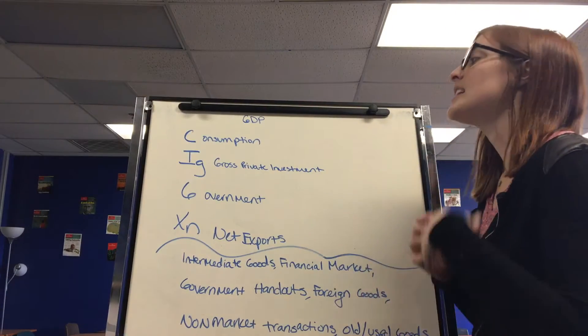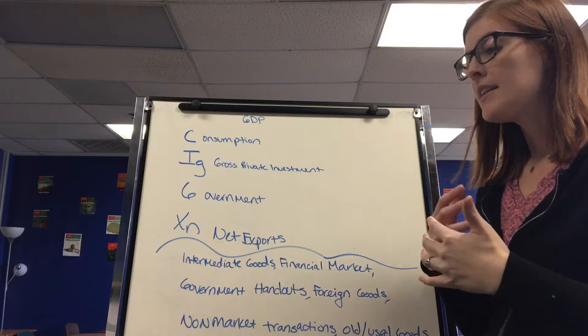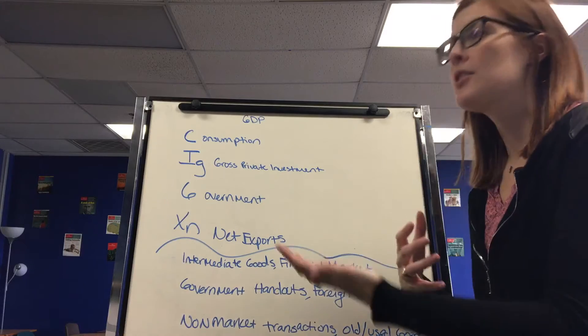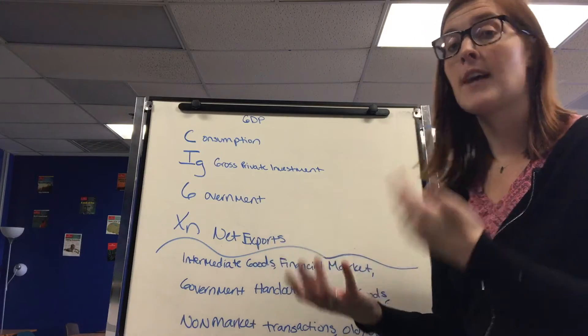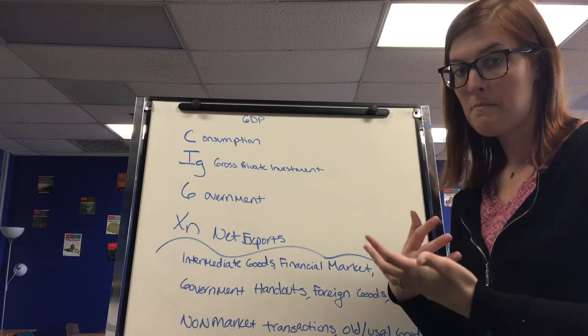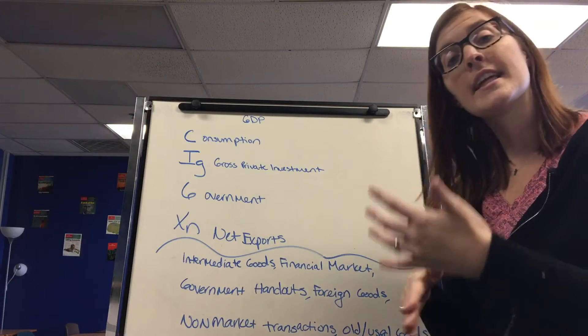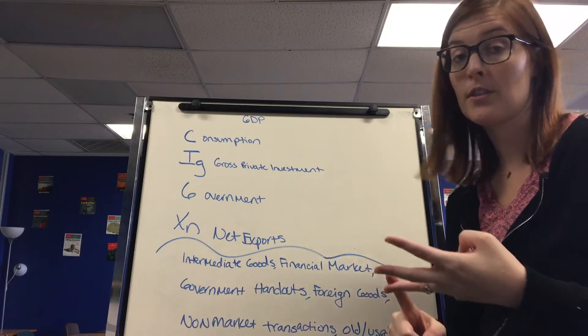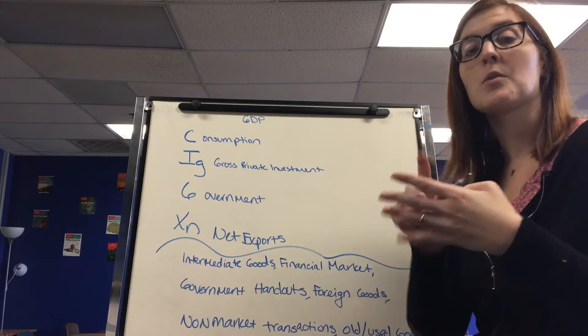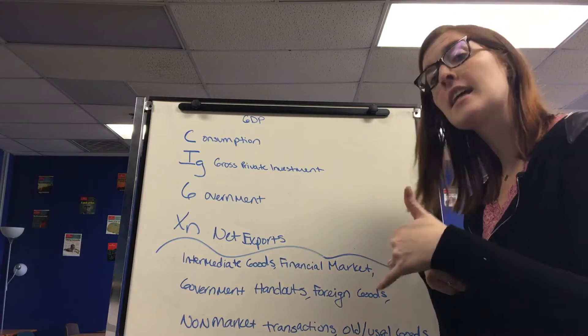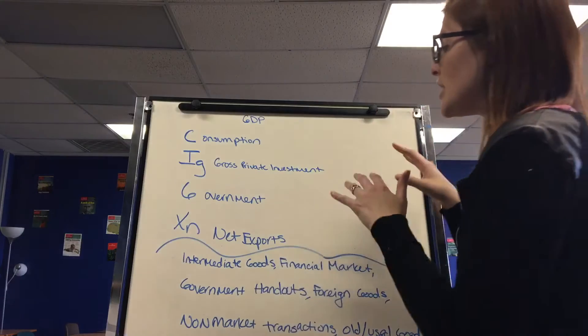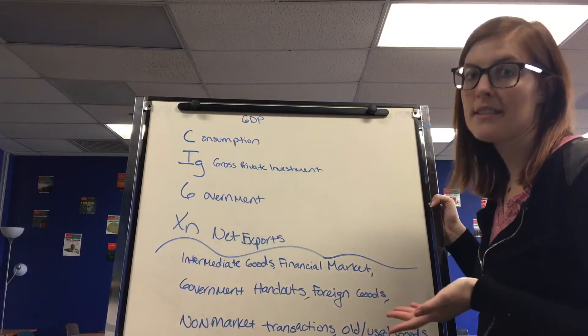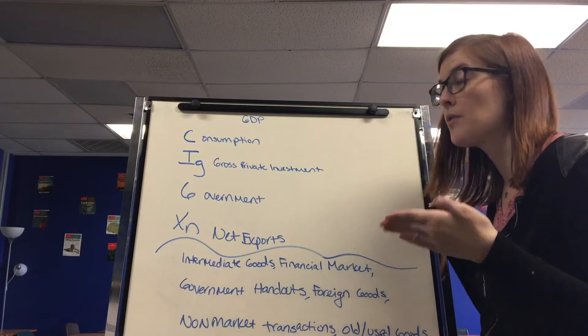The things that do count in GDP can either be an expenditure approach or the income approach, which we covered in the circular flow model. The expenditure approach looks at goods and services. The income approach measures GDP through incomes, which is wages for labor, rent for land, interest on capital, and profit for entrepreneurs. Those are the four types of incomes. But we mostly use the expenditure approach on the AP macro exam. Because they're both in the circular flow model, they end up equaling the same number.